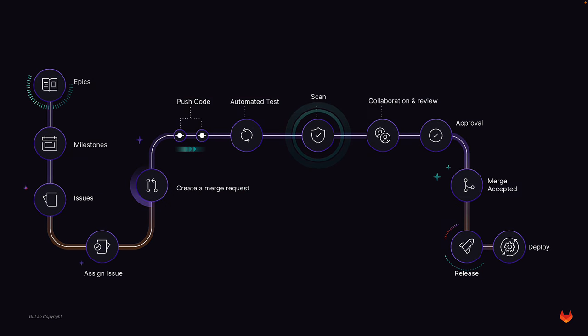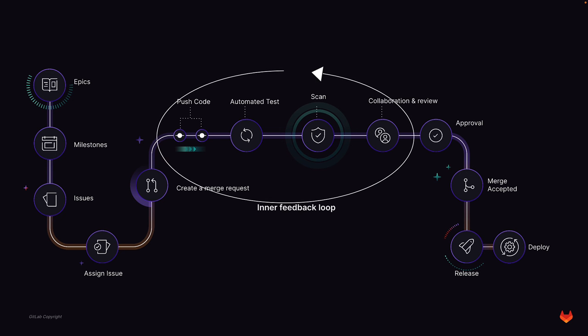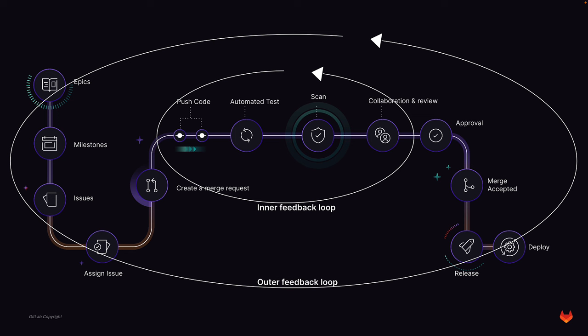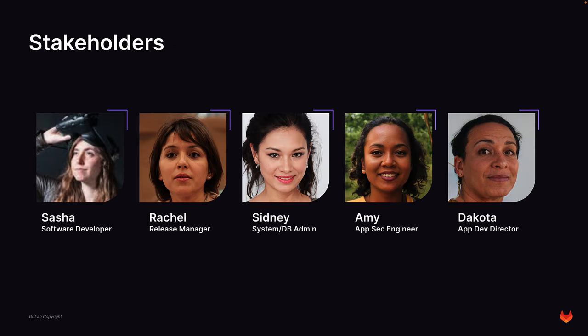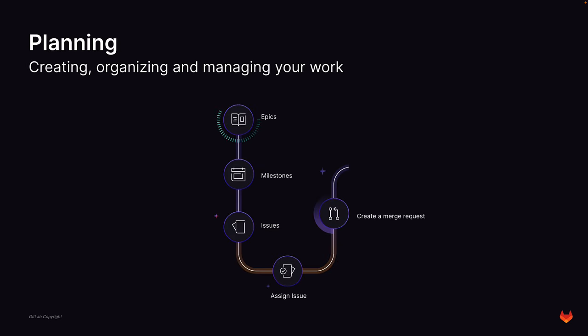Based on best practices and lessons learned, GitLab Flow spans across the stages of the DevSecOps lifecycle, forming an efficient workflow with an inner feedback loop for reviewing specific updates and an outer feedback loop for improving the entire application as well as the development lifecycle process itself. The first portion of GitLab Flow is planning.